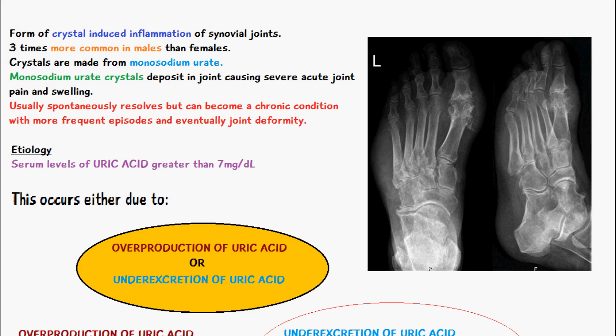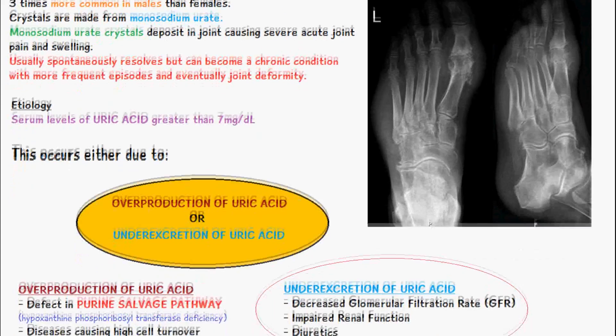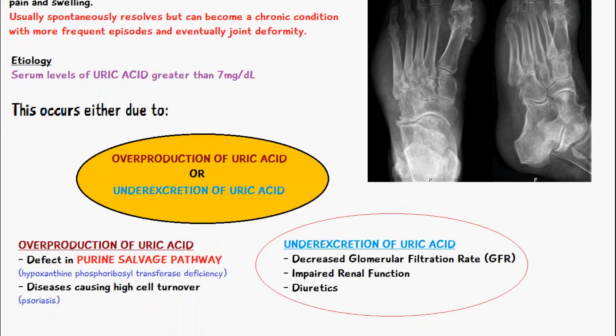The reason that we have gout is basically due to serum levels of uric acid — specifically the amount of uric acid present in the serum. Gout is more likely to occur with levels greater than 7 milligrams per deciliter.